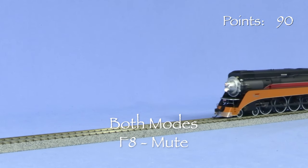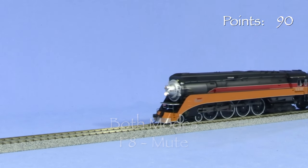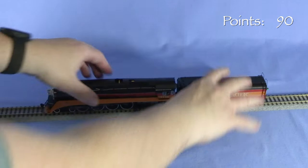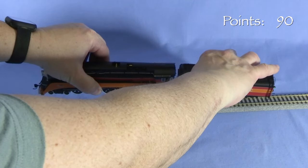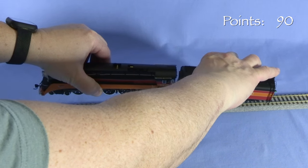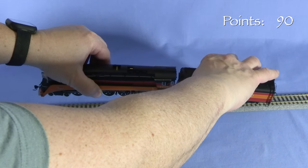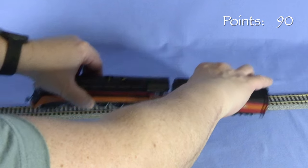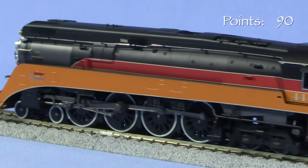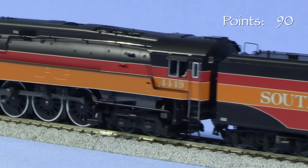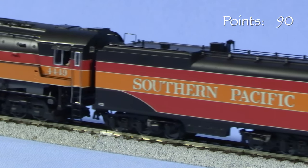F8 mutes the sound and the model runs quietly. The model has a capacitor circuit that will keep it running for a few seconds if it loses contact with the rails. I did notice a very slight hitch in the mechanism, but I haven't been able to determine if it's a mechanical issue or something that can be tweaked with CV programming.